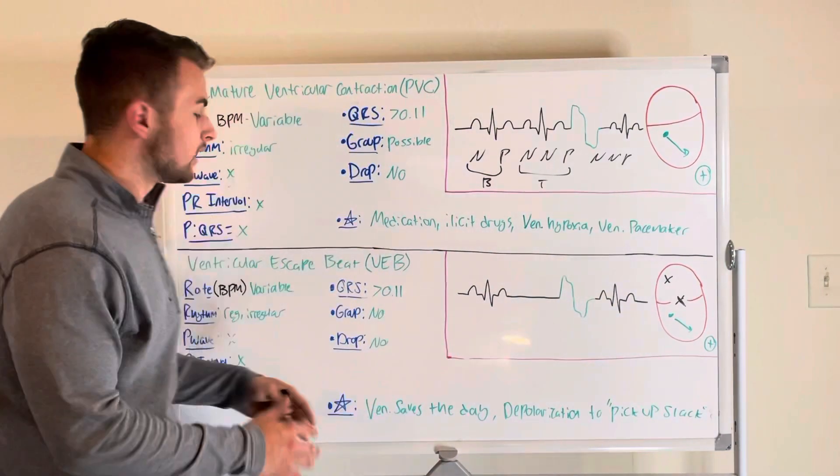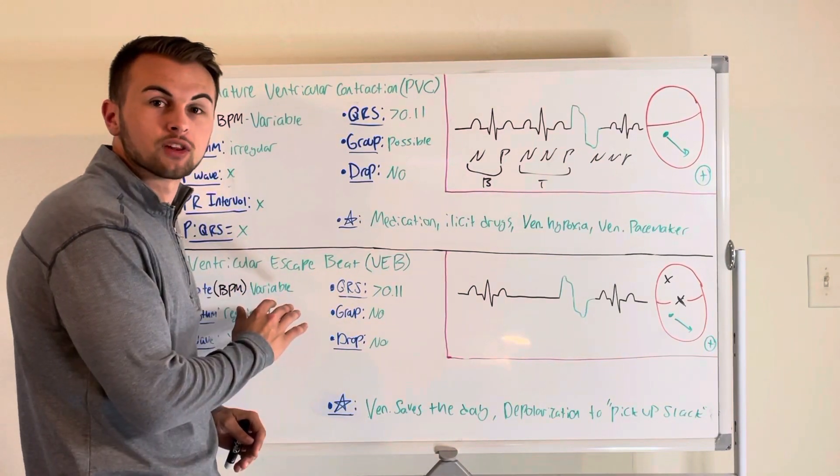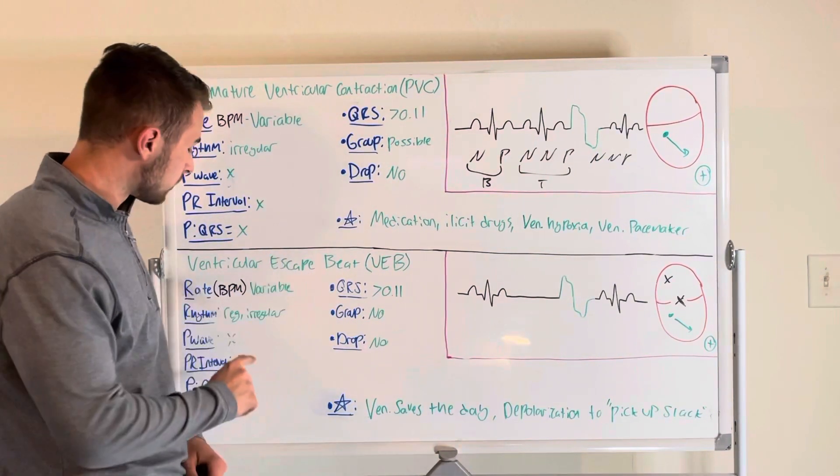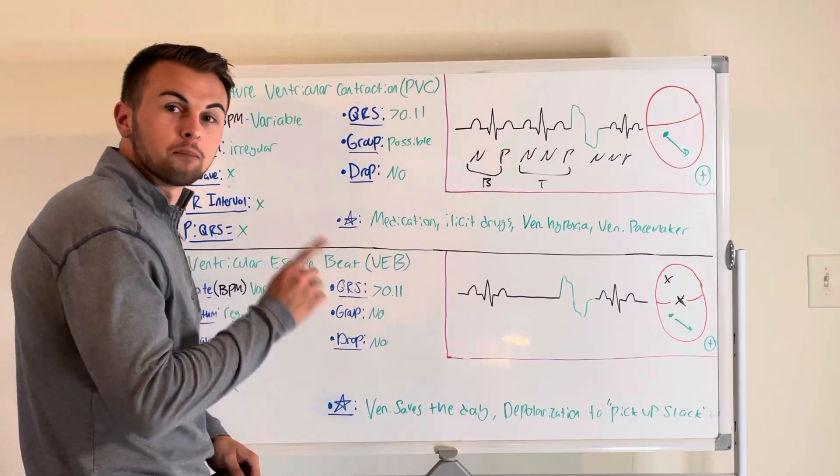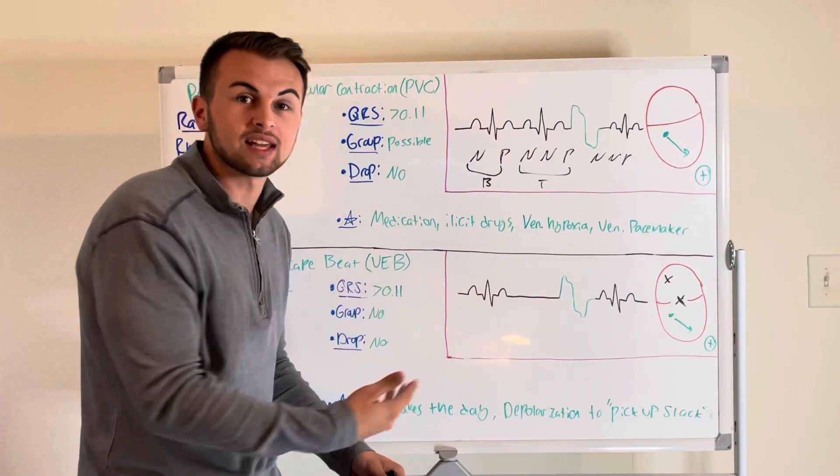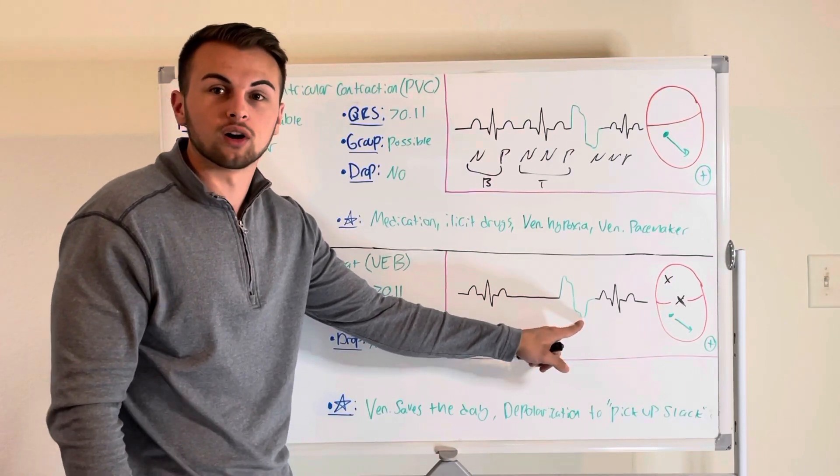Now the rate of this rhythm depends on the other underlying rhythm so it can be variable. But the rhythm itself is regularly irregular, meaning that we can regularly predict when this irregular complex will occur.